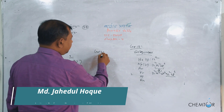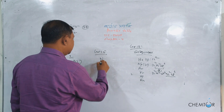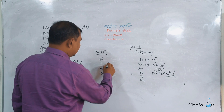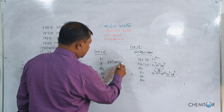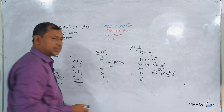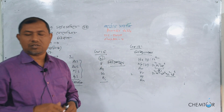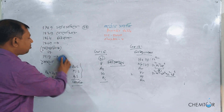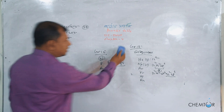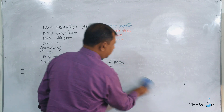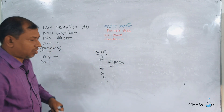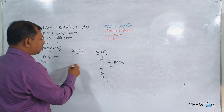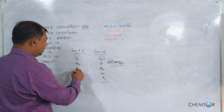Group 15: nitrogen, phosphorus, arsenic, antimony. Copper, gold, silver.